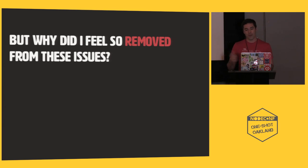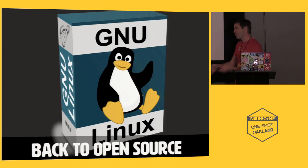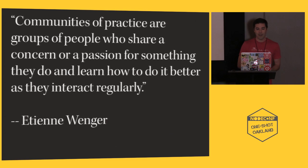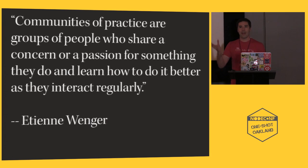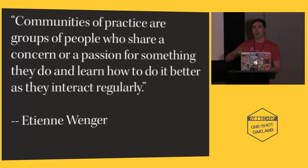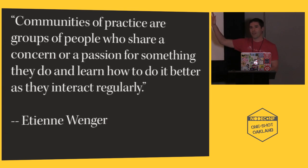There was still a problem I couldn't figure out: why did I feel so removed from this? Those barriers were difficult to dispute, but I myself had overcome them. So why did I feel so personally removed from these problems that other people were voicing? In order to answer that question, let's take a right turn back into open source and talk about something called a community of practice. This came up in Lena's talk, and there's a wonderful e-book called The Open Source Way written by the community architecture team at Red Hat. A community of practice was popularized by a theorist named Etienne Wenger — it's essentially a theory of social learning. You can even go back to hunter-gatherers and talk about how they learned to hunt and gather as a community of practice.